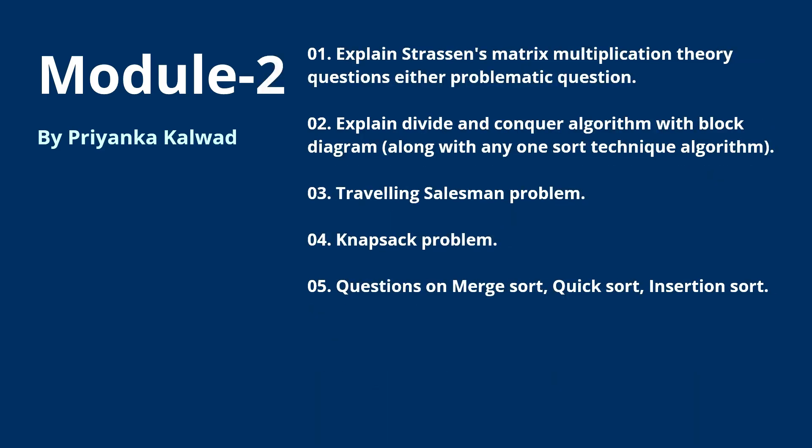Moving on to Module 2, we have five questions. The first is: explain Strassen's matrix multiplication — you can get theory or problem-based questions. The second is: explain the divide and conquer algorithm with a block diagram. Most of the time they also combine it with a sort technique — either merge sort, quick sort, or insertion sort.